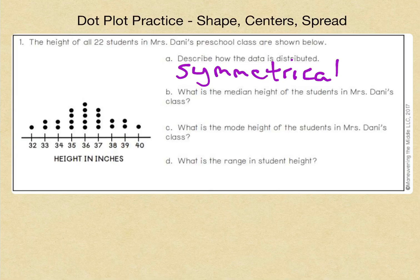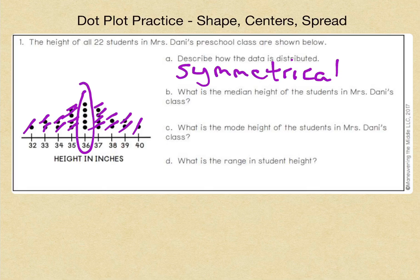Or you could have marked out your dots right on your dot plot. Now, since this data is symmetrical, you will notice that you are marking out the same points on both sides, which leaves you right in the middle with 36. So we have 36 inches as our median.